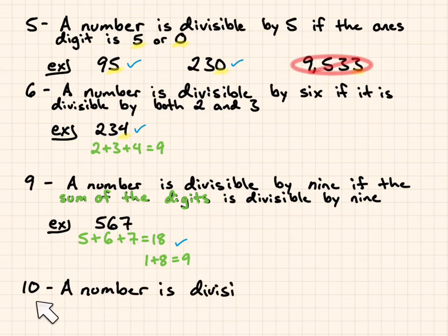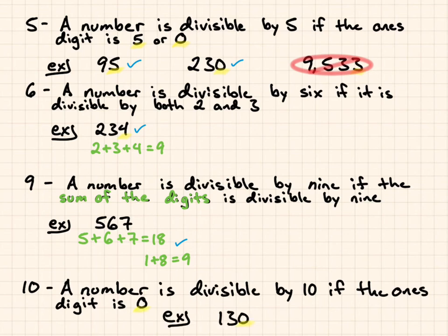Now, number 10. A number is divisible by 10 if the ones digit is a 0. So example, 130 is divisible by 10 because I have a 0 in the ones digit.